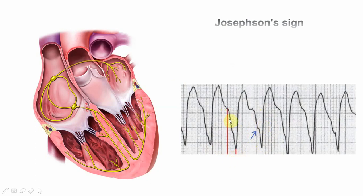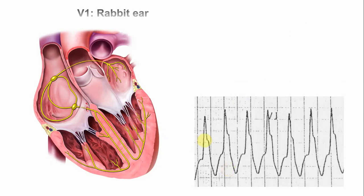If you look at the down-sloping part of the S wave, there is a little notch — this is called the Josephson sign. The Josephson sign is also very specific for the diagnosis of VT.